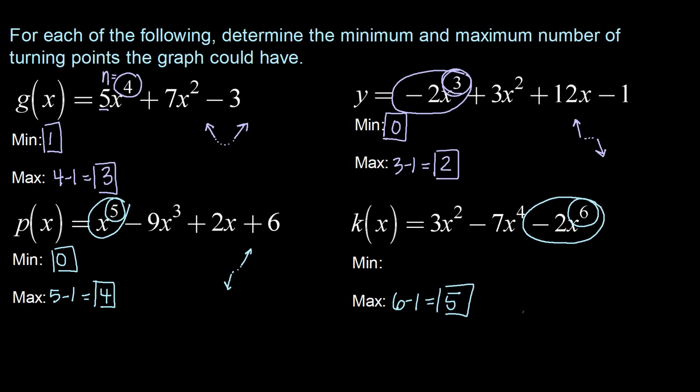And our minimum number of turning points. End behavior wise this has a negative lead coefficient so I know the behavior to the right is down. With even degree the other behavior will be exactly the same. And the only way for me to connect those is to have at least one turn around. Gotta have at least one hill there. So I have a minimum of one turning point.